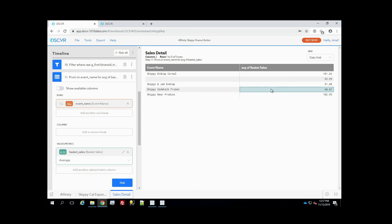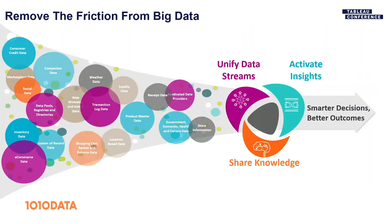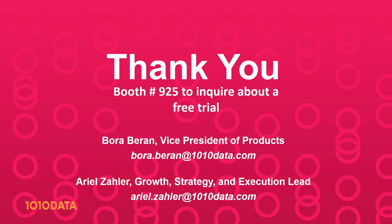And with that, we've run through a couple market basket analyses on enormous amounts of data. We did an affinity analysis instantaneously on 96 billion rows. We were able to connect live and visualize that in Tableau. We performed a data densification and did a couple complex fuzzy joins as well. To summarize the value proposition of 1010 Data and the Discover platform: we really remove the friction between big data and their users. We can unify an enormous number of data streams, we can easily activate insight, and we can share and reapply that knowledge. Thank you — feel free to stop by our booth to learn more or get a free trial of the product.